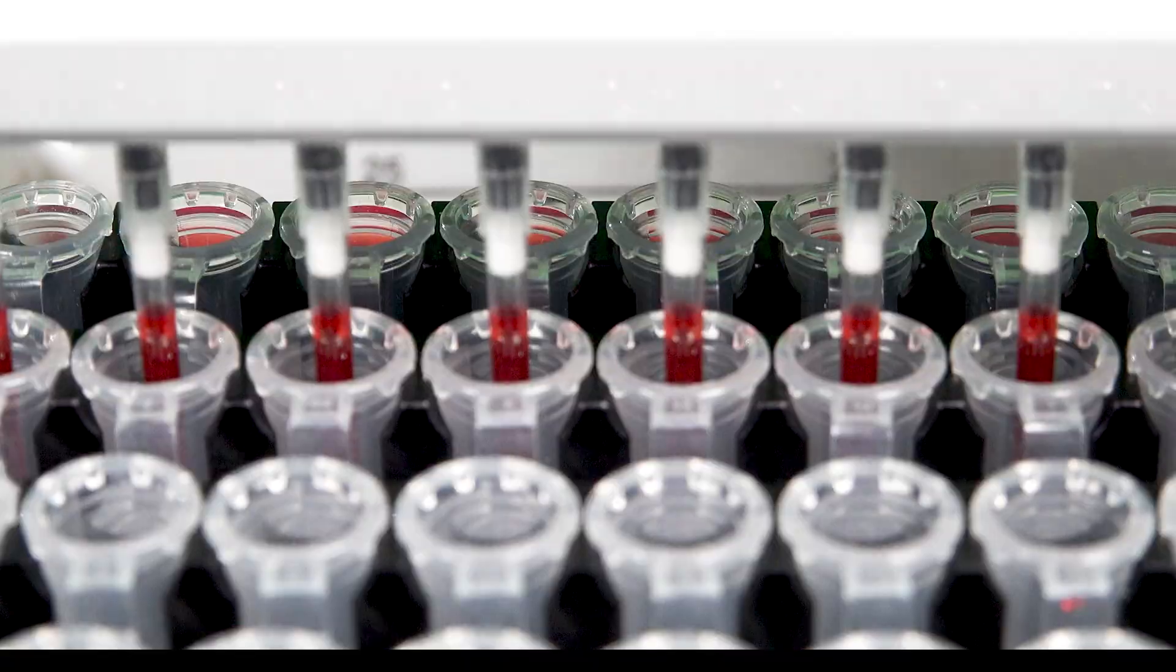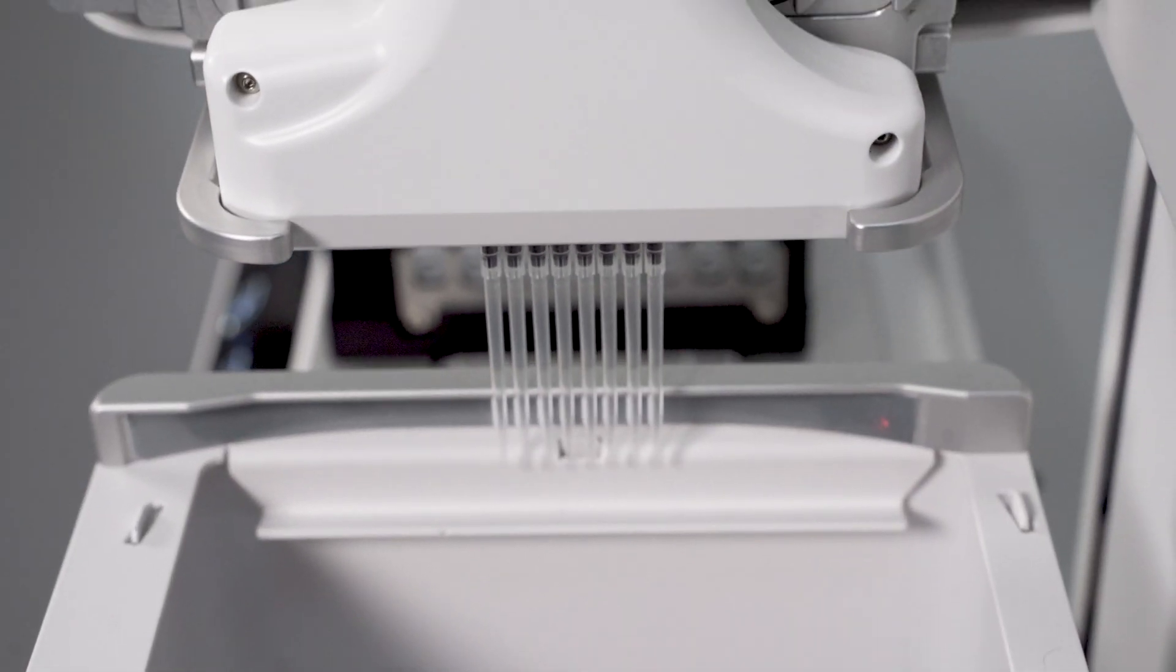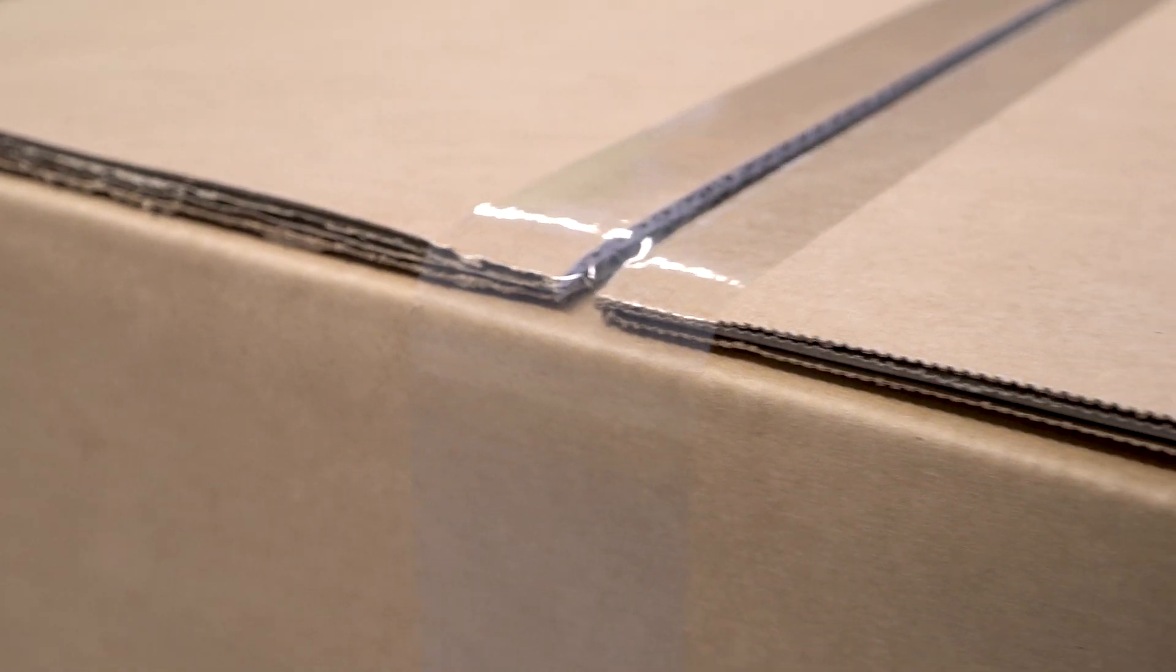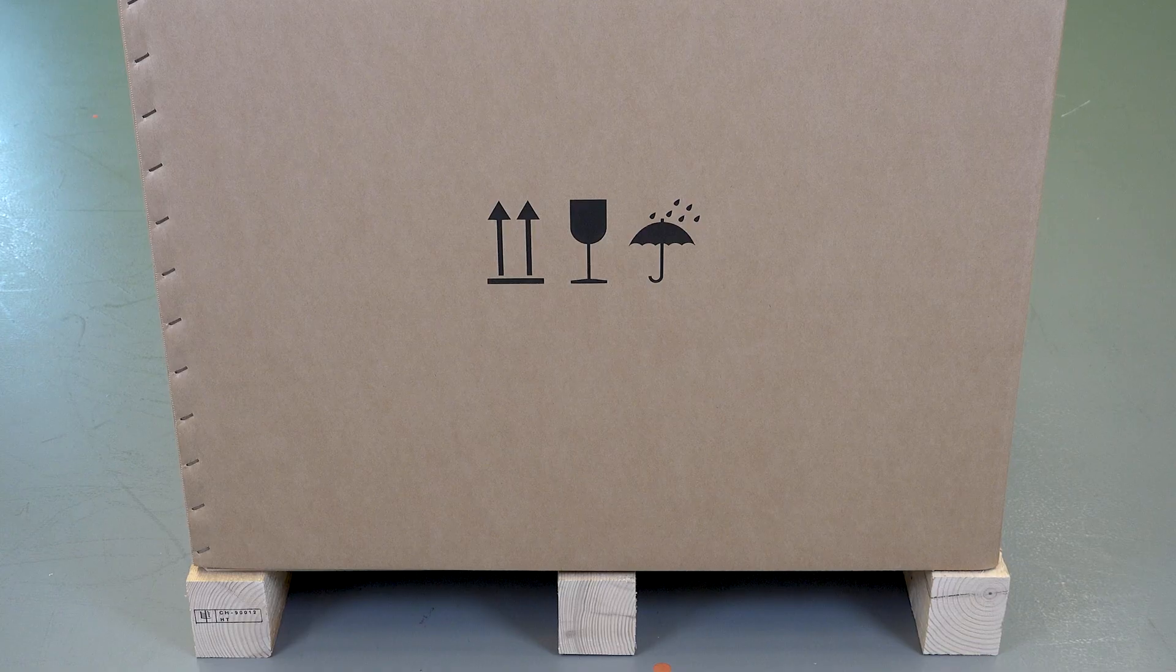Today we want to show you how to install the Assist Plus Pipetting Robot from Integra. The instrument is delivered on a wooden crate and is covered by a carton box.